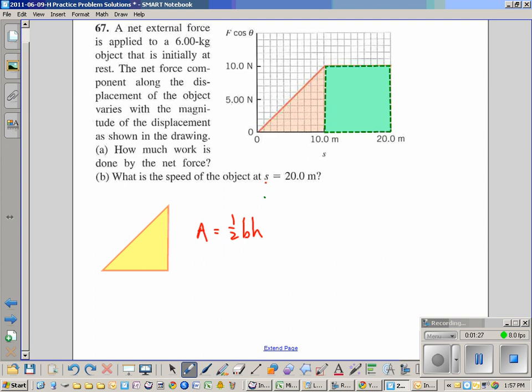So one-half bh, and so what's the base? 10 meters. So we've got one-half of 10 meters. The height is 10 newtons. That is equal to 50 newtons. It's equal to 50 what? 50 joules.